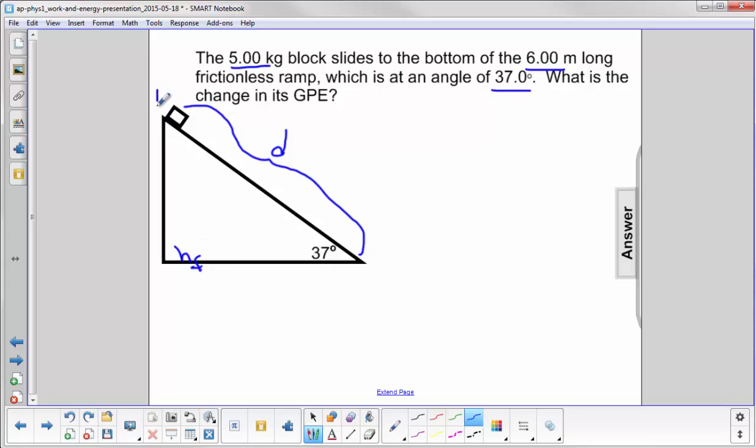And up here, this is our initial height. So the gravitational potential energy will be related to this distance here, certainly not this distance. So we're going to have to find what this is equal to.